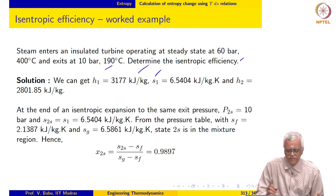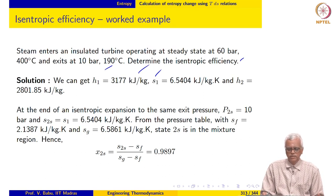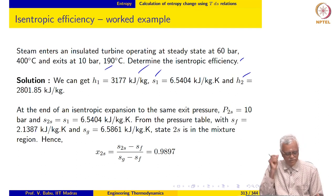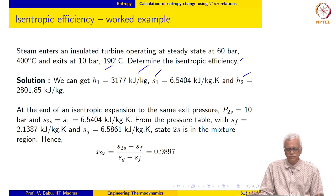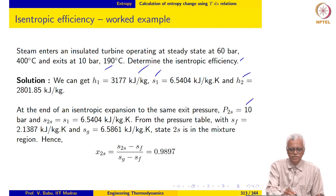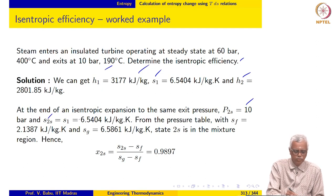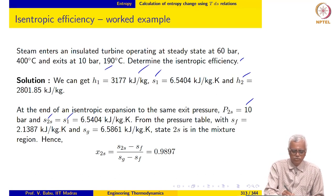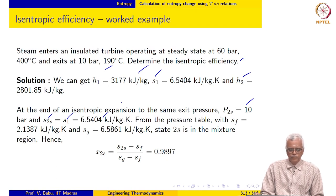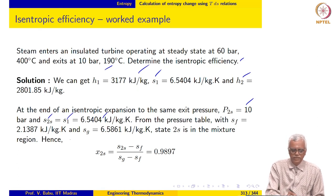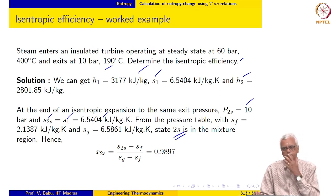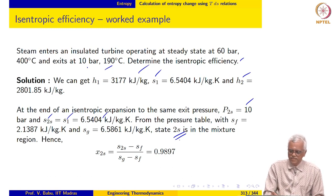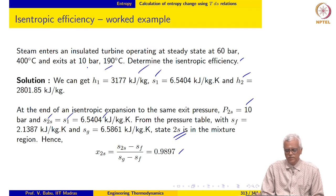We get H1 and specific entropy S1 from the superheated steam tables, along with H2. If the expansion process is isentropic, the exit pressure would still be 10 bar and S2S equals S1, so S2S = S1 = 6.5404 kJ/kg·K. From the pressure table, we notice that state 2S is in the two-phase mixture region, with a dryness fraction X2S evaluated as 0.9897 — just barely below the saturated vapour line.